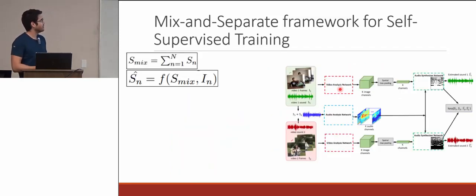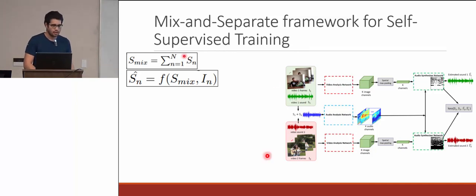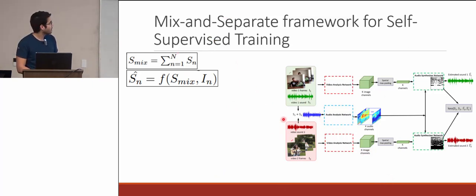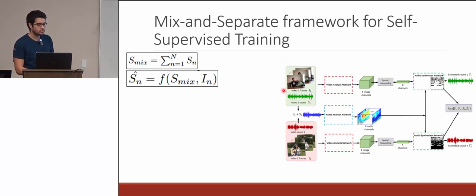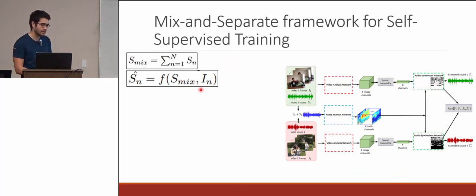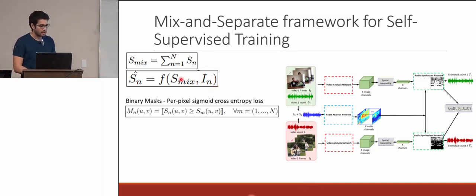SMix is simply the addition of the audio sources together. In this case N equals two because they have two audio sources — two input videos. S_n_hat represents the outputs from the audio synthesizer network, where the inputs are the mixed audio and the image frames from each video. There will be a different S_n output for every sound source.